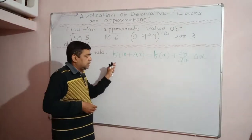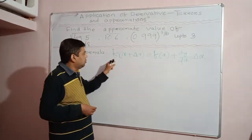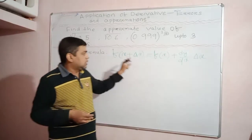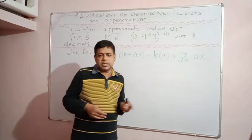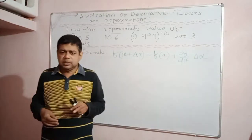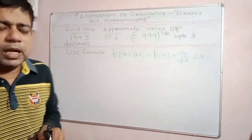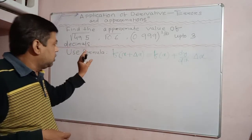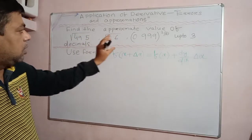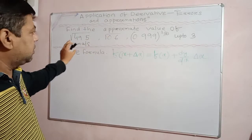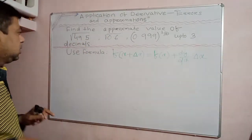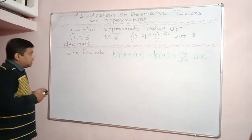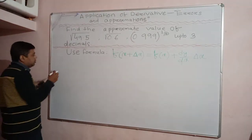The formula is: f(x + Δx) = f(x) + (dy/dx)·Δx. This formula has already been discussed. This is the only formula you need to find all such kinds of problems correctly. So let us start with the first number.